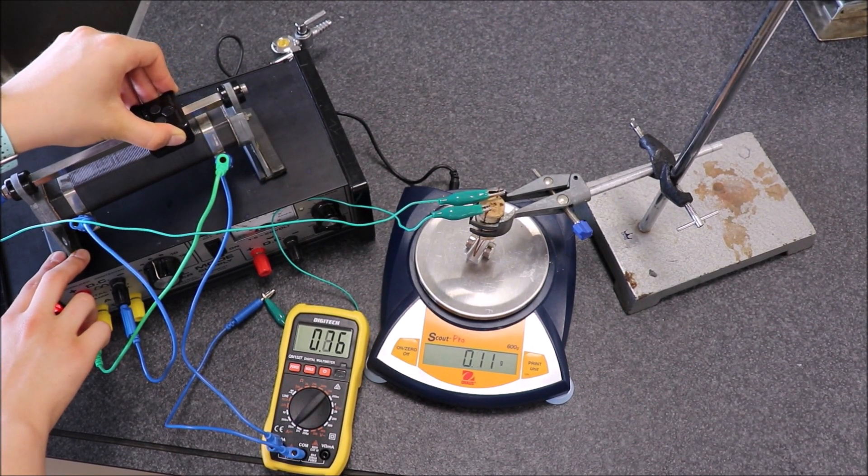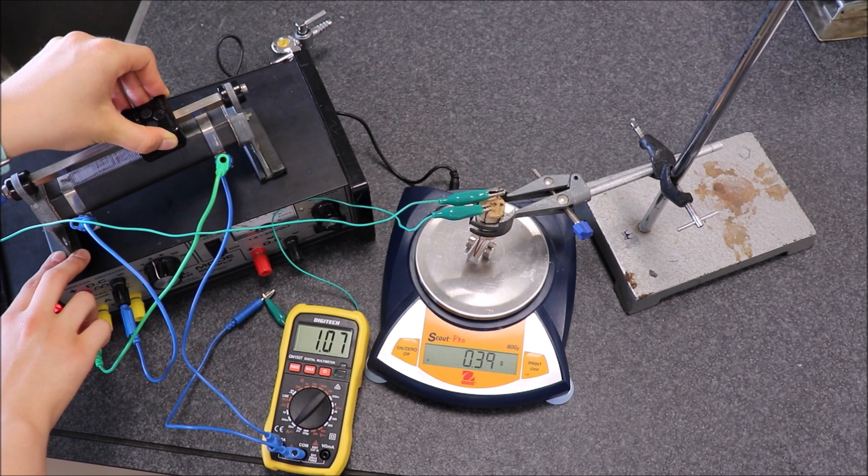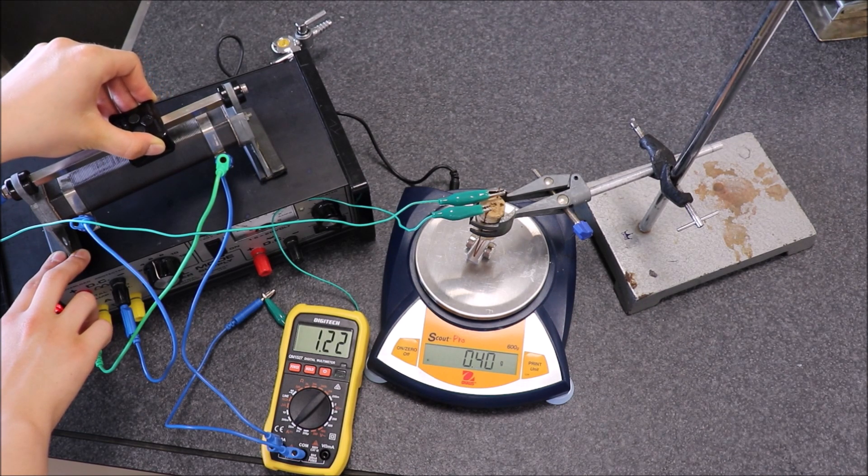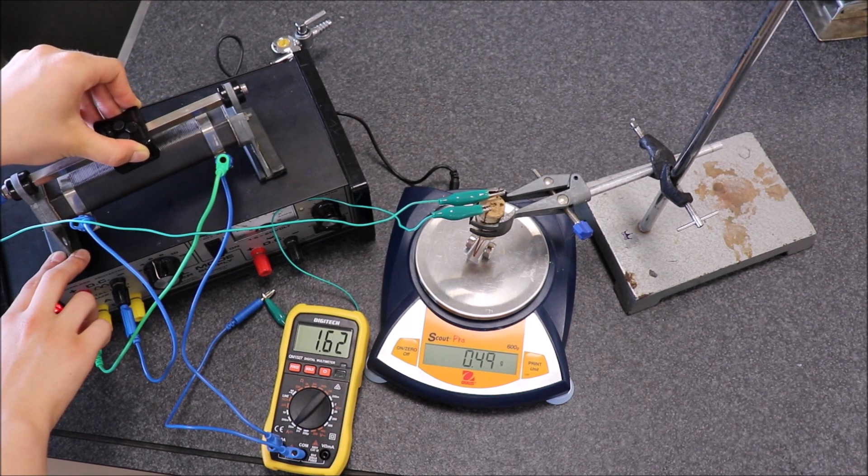Now we're increasing the current, and you can see that on the ammeter. As the current increases, the scale reading on the electronic balance also increases.